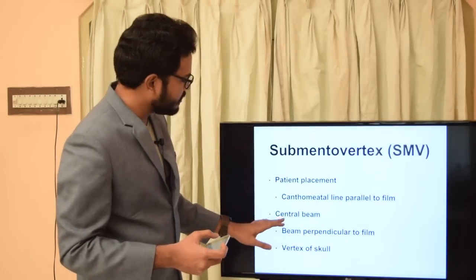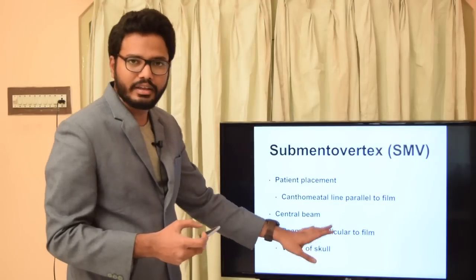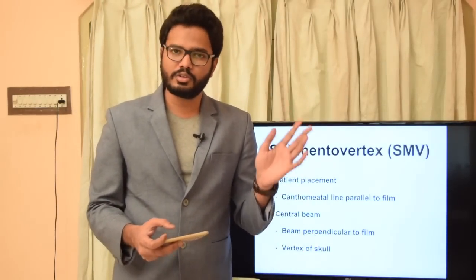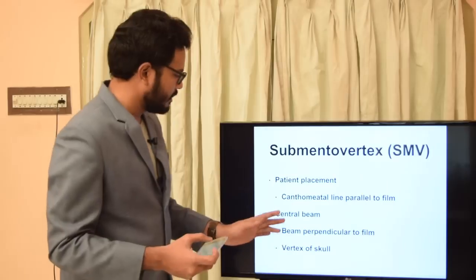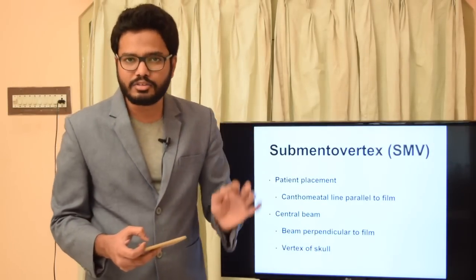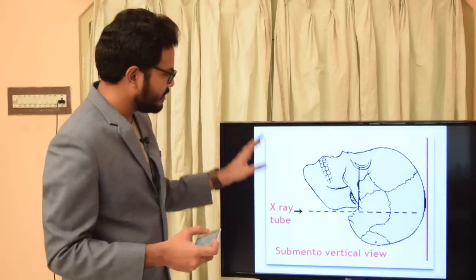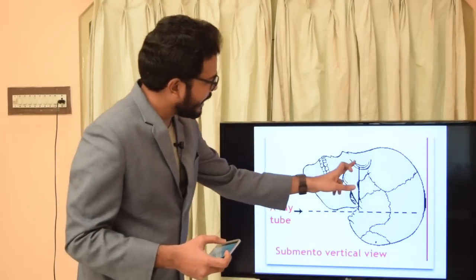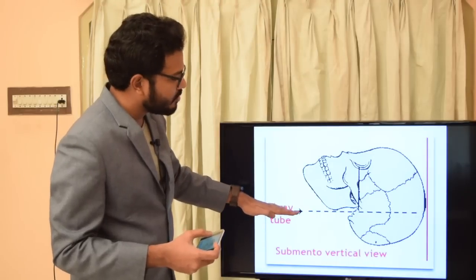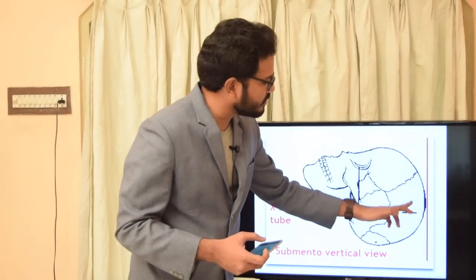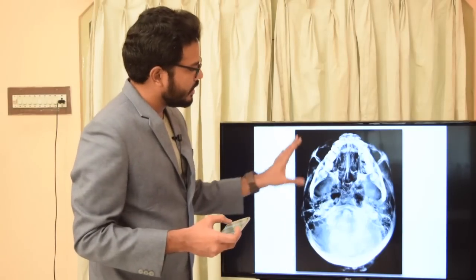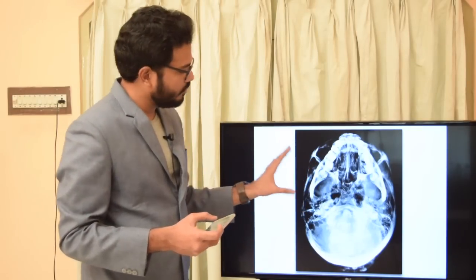The cantho-meatal line has to be parallel to the film, and the central beam of x-ray is perpendicular to the film. The central beam should be directed towards the vertex of the skull — the highest point on the skull. As seen in this image, the cantho-meatal line is parallel to the film and the central x-ray beam is oriented towards the vertex of the skull.